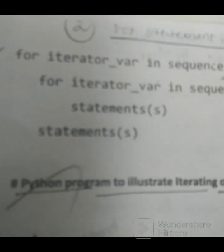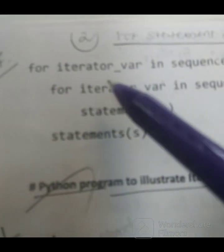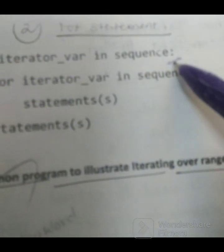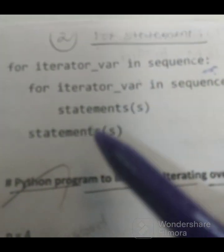For loop general format in Python: for some variable in sequence, colon, sorry that is colon, then some set of statements.